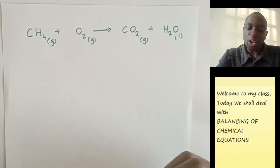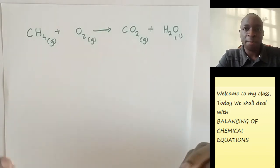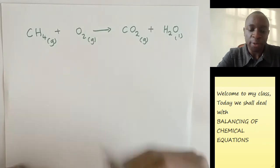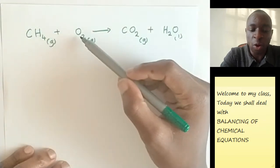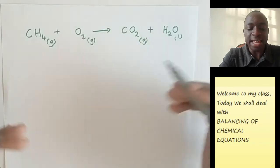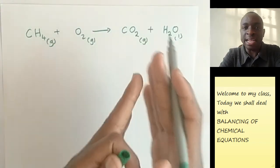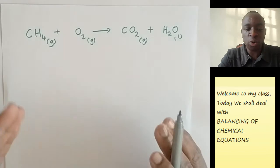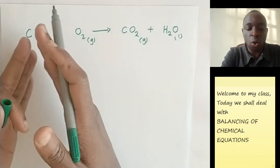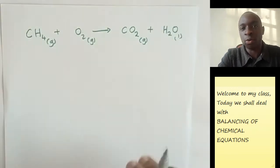Now, the law of conservation of matter is one of the basic principles that guides us on balancing chemical equations. What that basically means is that whenever we are having substances reacting, for example in this case methane reacting with oxygen to form carbon dioxide and water, the number of each kind of element remains the same because you cannot destroy the hydrogen that was here. It will only be converted into something else in the product side.